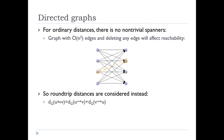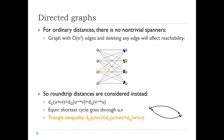So in directed graphs, round-trip distances are considered instead. The round-trip distance between U and V in G is the distance from U to V plus the distance from V to U, or equivalently, it is the shortest cycle passing through U and V. Round-trip distance also satisfies the triangle inequality.